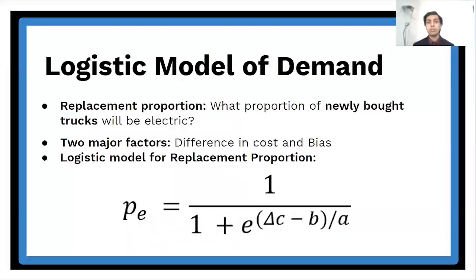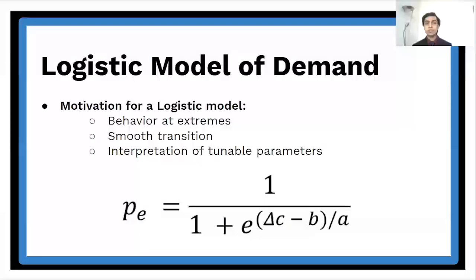Thanks Sami. So now that we have the extrapolated costs for diesel and electric trucks, the next step is to create a logistic model of demand, which takes in this cost difference and outputs a replacement proportion, which is the proportion of newly bought trucks that are predicted to be electric. The two major factors here are difference in cost represented by delta C and bias represented by the parameter B. The motivation for using a logistic curve for this model is that at extreme values of delta C, we would expect nearly 100% of companies to use the cheaper option. However, at intermediate values of cost difference, we would expect a smooth transition between nearly all electric and nearly all diesel. And the logistic curve gives us exactly this kind of a shape. And furthermore, the tunable parameters B and A have clear interpretations as a bias parameter towards electric or diesel trucks and a spread parameter on the sharpness of the logistic distribution.